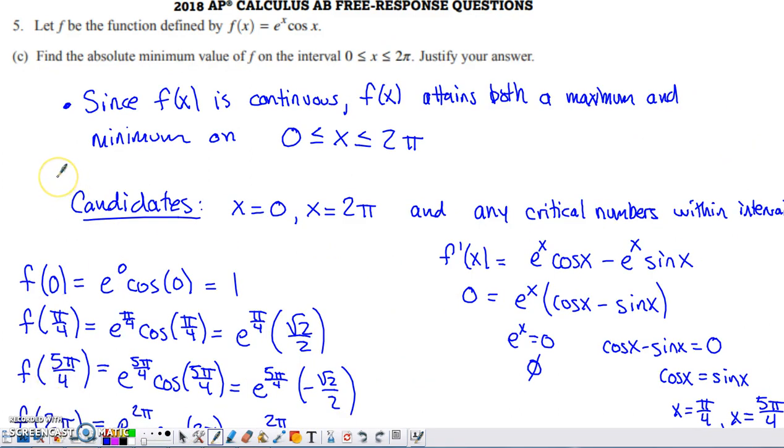Part C was the lengthiest part here. It asked you for the absolute minimum value of the function, evaluate it on the interval 0 to 2 pi, justify your answer. What I used as my justification was the extreme value theorem. This function is continuous on this interval. Therefore, I'm guaranteed to get both a max and a min. The way I'm going to find my max and my min is I'm going to identify my candidates, which are the endpoints of the interval, as well as any critical numbers within that interval.